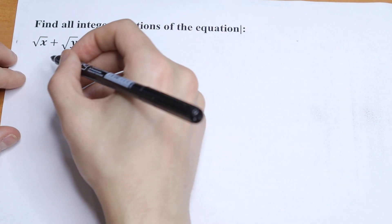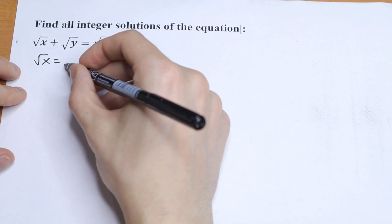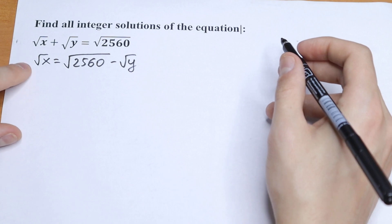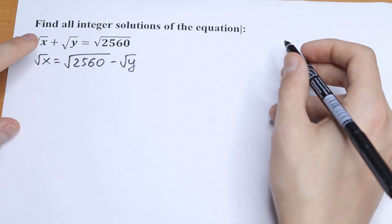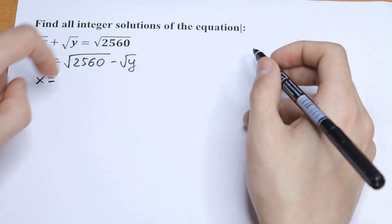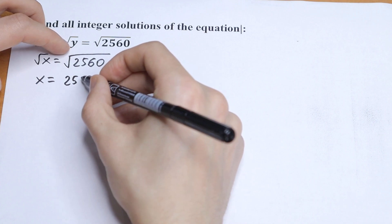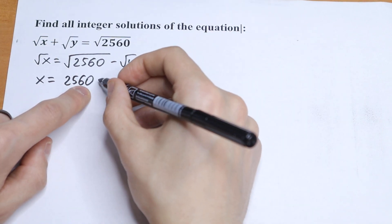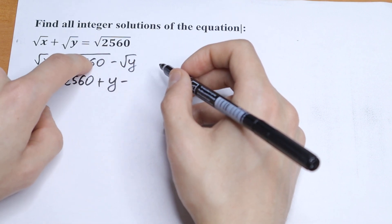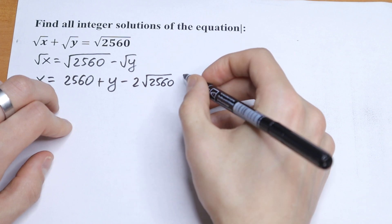Let's express square root of x from here. We will have square root of x equal to square root of 2560 minus square root of y. We don't need the square root sign, so we raise both sides to the second power. We will have x equal to (√2560 − √y)², which expands as 2560 minus y minus 2 times square root of 2560 times square root of y, giving us 2 times square root of 160 times square root of y.